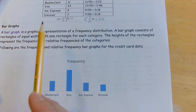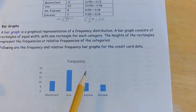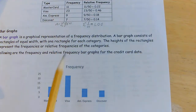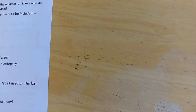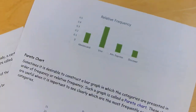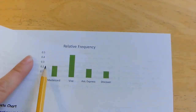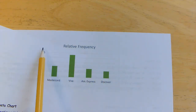A bar graph is a way to display this qualitative frequency distribution. Each category has its own bar — so this displays the frequency. For example, there were 11 people that had MasterCard, so the bar shows 11. You could also display the relative frequency, which is the same graph but now shown in percents for each category. The bars are the same size because the counts are the same, but one displays whole frequencies and the other displays percents.